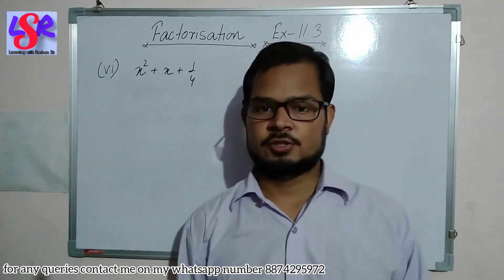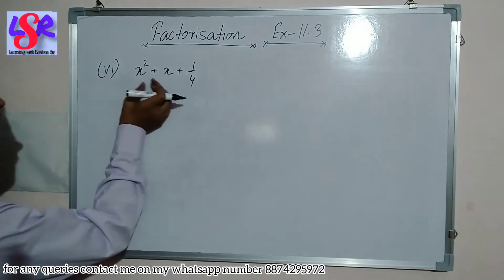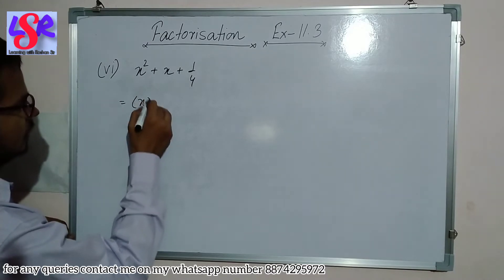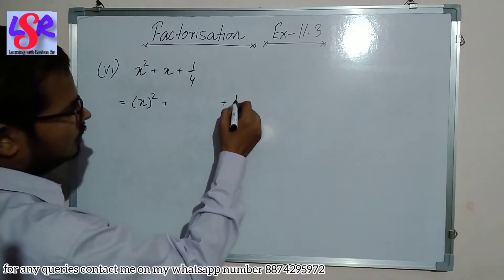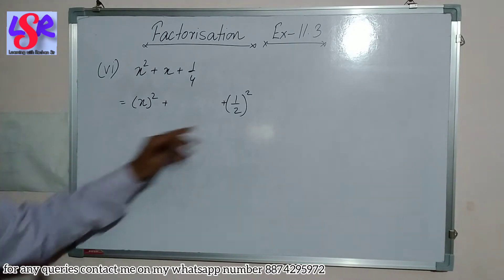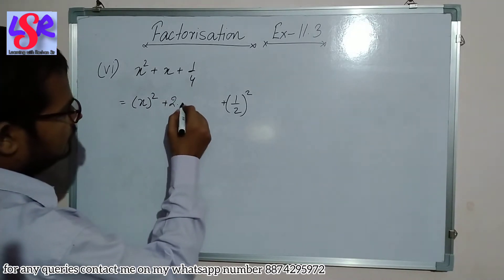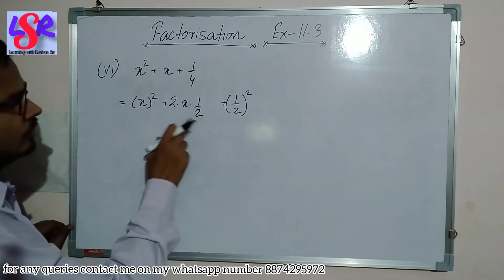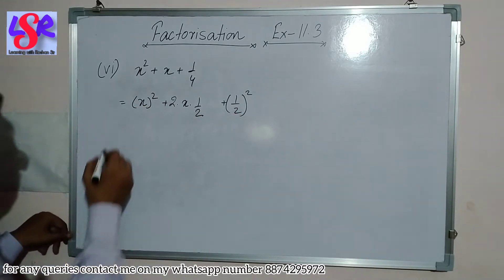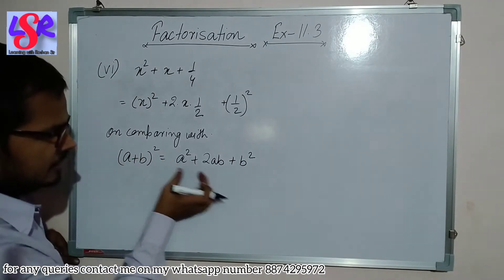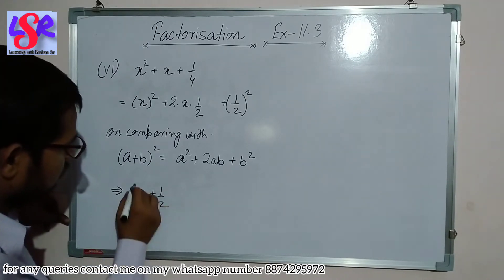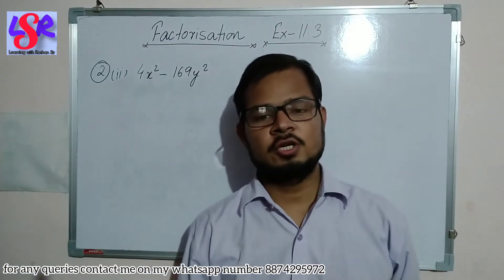Now the sixth part: x²+x+1/4. Here x² is a square of x, and 1/4 is written as (1/2)². The middle term is written as 2×x×(1/2), which is in 2ab form with a=x and b=1/2. Comparing with (a+b)²=a²+2ab+b², this gives (x+1/2)² as the answer. Now let's go with question number 2 first part.